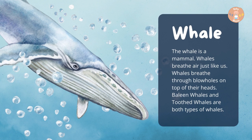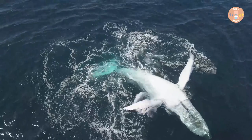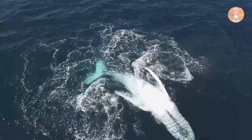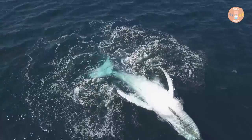Whale. The whale is a mammal. Whales breathe air just like us. Whales breathe through blowholes on top of their heads. Baleen whales and toothed whales are both types of whales.